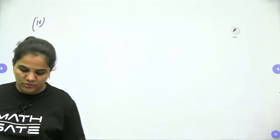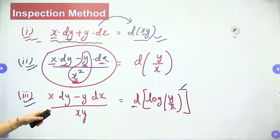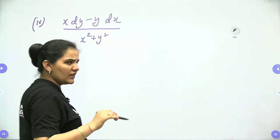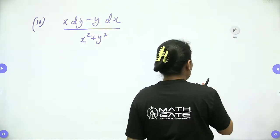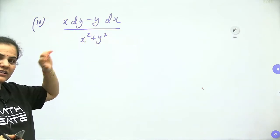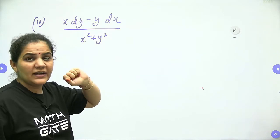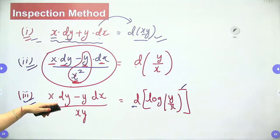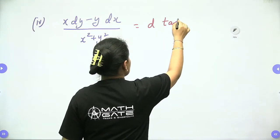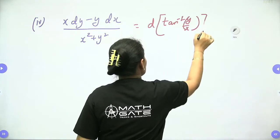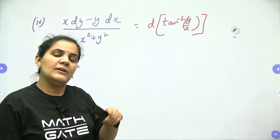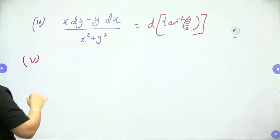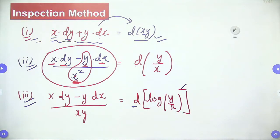The fourth form: (x dy − y dx) / (x² + y²) is the differentiation of tan⁻¹(y/x). When we have xy in the denominator it gives a log form; when we have x² + y² in the denominator it gives the feeling of tan inverse. You can verify by differentiating tan⁻¹(y/x) using the chain rule to get the same expression.